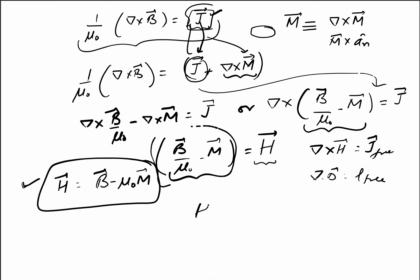So H = B/μ₀ - M. This definition explicitly involves the effect of magnetization as well as magnetic flux density. Its units are ampere per meter, and we can write B = μ₀(H + M).